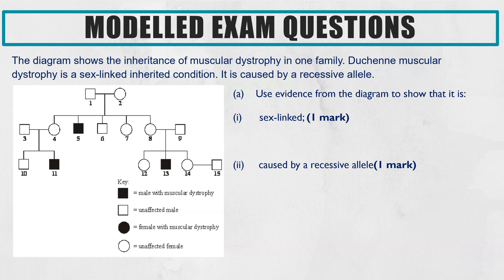Now let's look at some modelled exam questions where we can apply those patterns, but also look at how you can prove or disprove whether the condition is sex-linked, because that's also a really common question. Here we have an exam question: the diagram shows the inheritance of muscular dystrophy in one family. Duchenne muscular dystrophy is a sex-linked inherited condition caused by a recessive allele, so we know it's recessive and sex-linked.